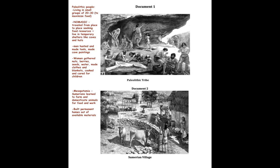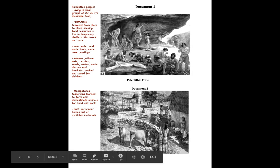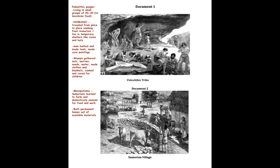For document two, the Sumerian village: I know Sumer was a city-state in Mesopotamia. The Sumerians learned to farm and domesticate animals — taming them so they could use them for food and help with work. They also built permanent homes out of the available material in the environment. That's human environment interaction as well.